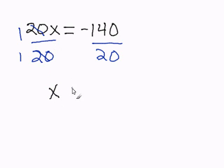So I will get x, and negative 140 divided by 20 is negative 7, and x is equal to negative 7. And this completes my problem.